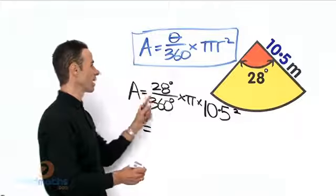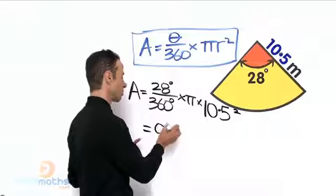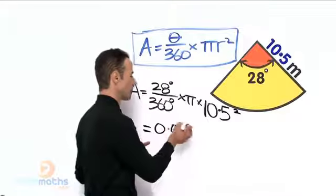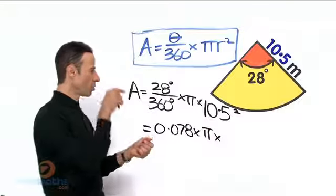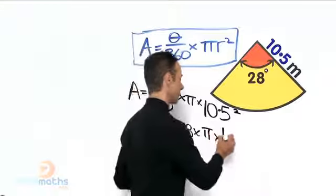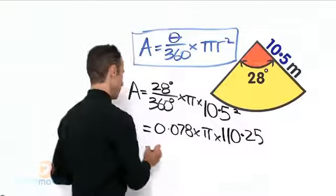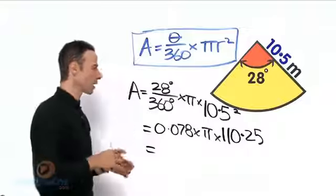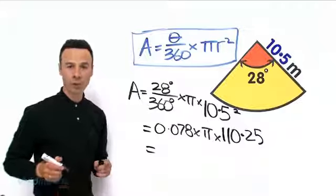Let us work that out. Putting that into our calculator, we will get 28 divided by 360 is 0.078 times pi times 10.5 all squared. 10.5 squared is 110.25, and that, putting the whole thing in the calculator, is 26.94 meters squared.